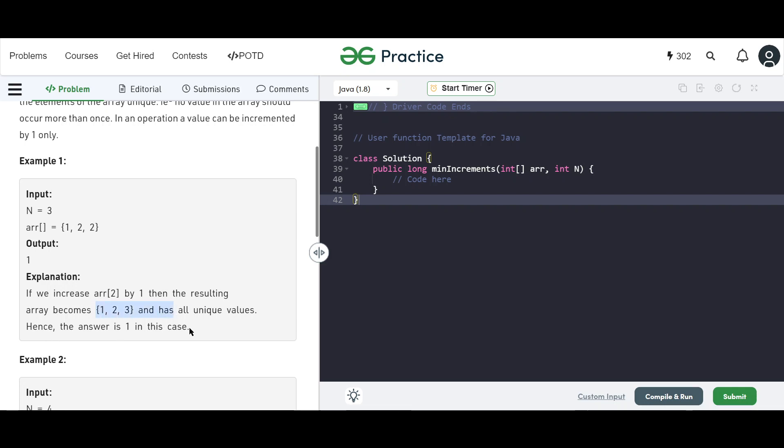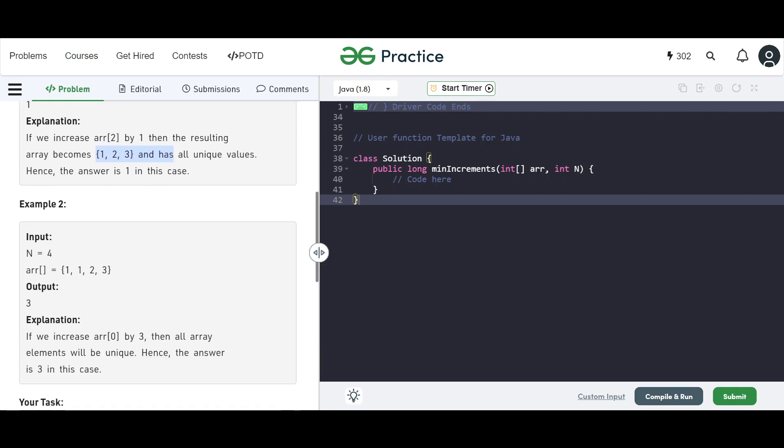Example number two: one, one, two, three. So this guy has a problem. We can't leave it as is, we have to change it. If we increase array[0] by three, then all the other elements will be unique. Hence the answer is three, and that's fair.